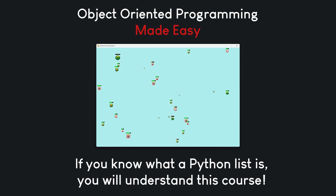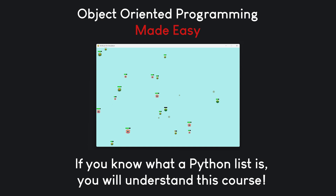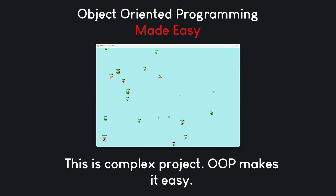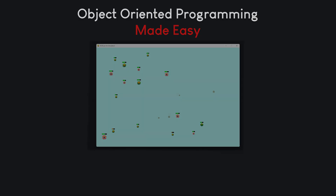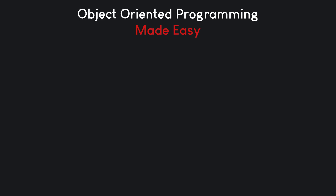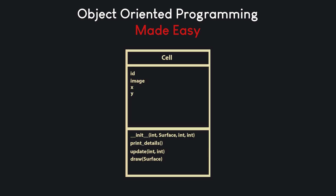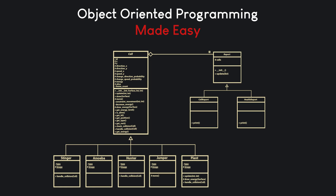You will finally see why object-oriented programming is so powerful and how it helps you turn messy, chaotic code into something clean and scalable. This project is complex using traditional programming techniques, but with object-oriented programming it becomes surprisingly easy to handle. We will cover all the key OOP concepts: classes, inheritance, encapsulation, polymorphism and more. I'll even show you how to use UML to visually design your project before you start coding — it's a game changer for organizing and planning your software. You'll see how a few simple diagrams can save you hours of coding headaches.